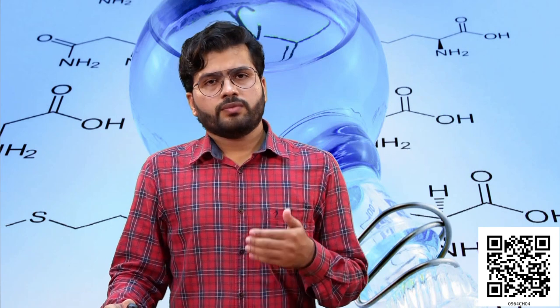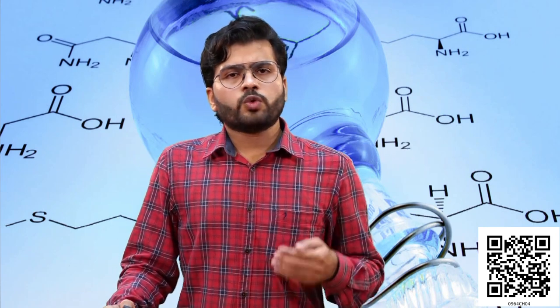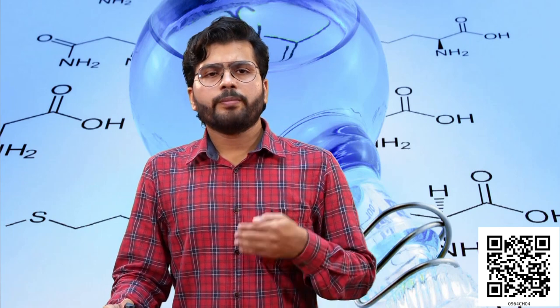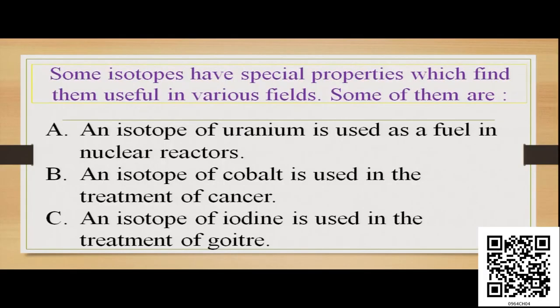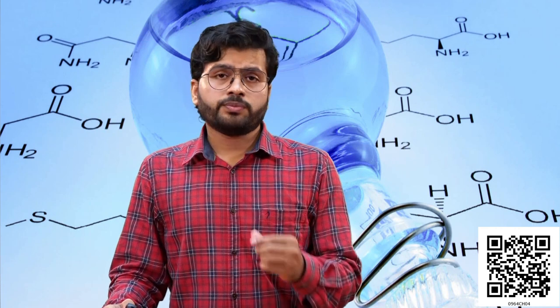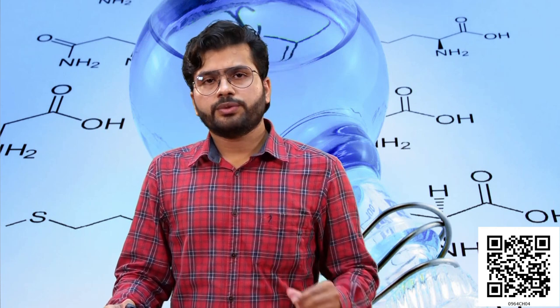Now moving on to the application — because of the isotopic form, they have found many applications in our day-to-day life. For example, uranium has an isotope which is used in the nuclear reactor. An isotope of cobalt is used for the treatment of cancer. And an isotope of iodine is used for the treatment of the disease called goiter. So isotopes also find usefulness in day-to-day life.